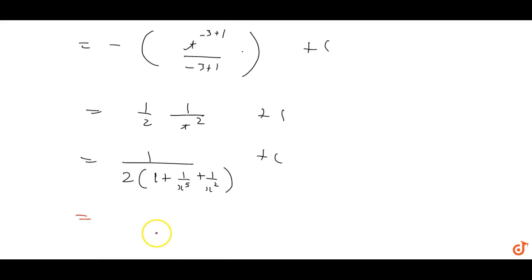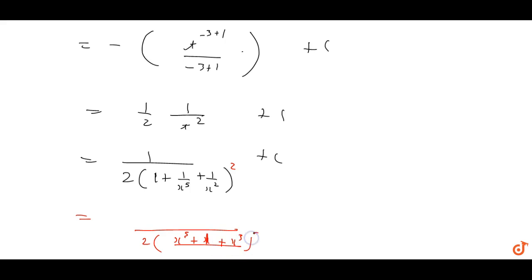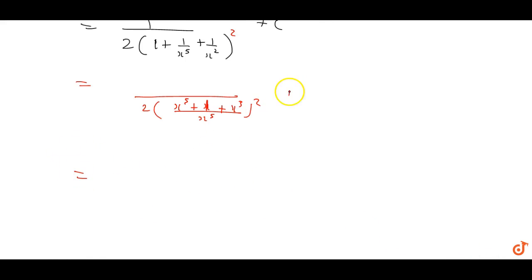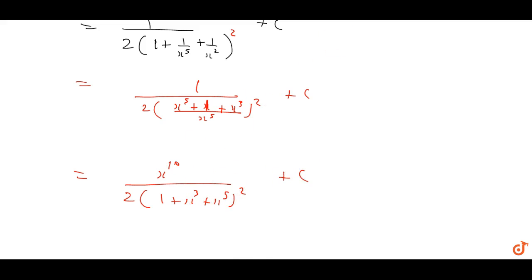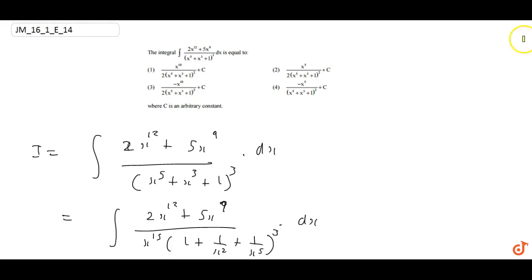Now we take LCM: 2 upon (x^5 + x^3 + 1)^2 divided by x^10, simplifying to x^10 / [2(1 + x^3 + x^5)^2] + c. This will be our final answer, and option 1 is the correct answer.